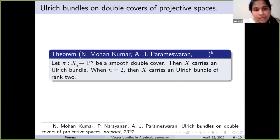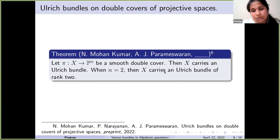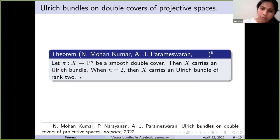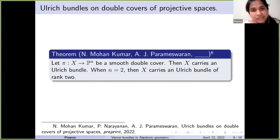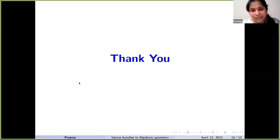If X is a smooth double cover of projective space, then X carries an Ulrich bundle; and if it is a double cover of the projective plane, the Ulrich bundle has rank two. I am currently working with Prabhakar in order to understand Ulrich bundles in the context of non-commutative geometry and derived categories. That's about what I wanted to say — thank you.